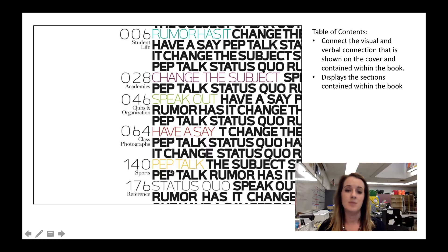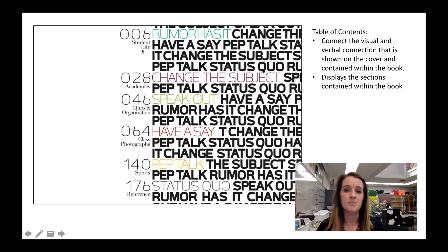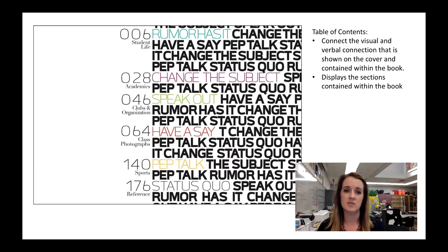The other sections are called 'Speak Out,' 'Have a Say,' 'Pep Talk,' and 'Status Quo.' They didn't just write 'Student Life' — they put it off to the side so the reader is clued in, but they're playing off the theme and the voice of the book. We can also see that they're introducing a serif font with little tails, probably to use in their body copy writing, which makes for a very easy typeface to read.